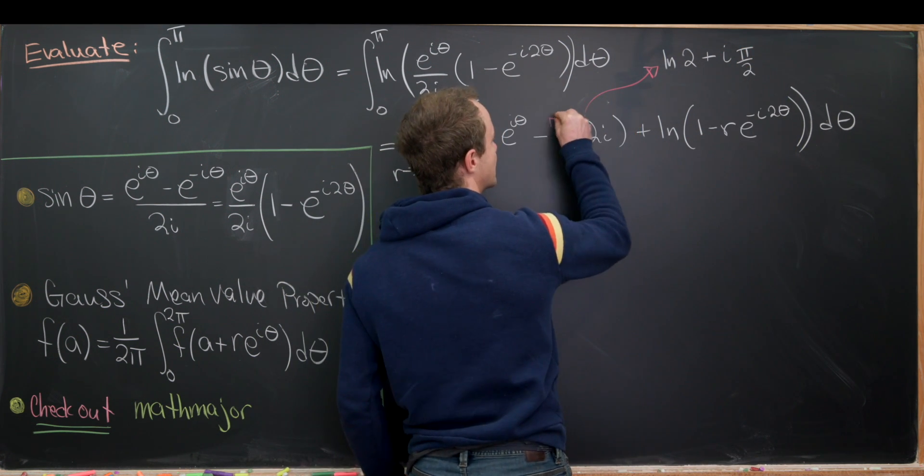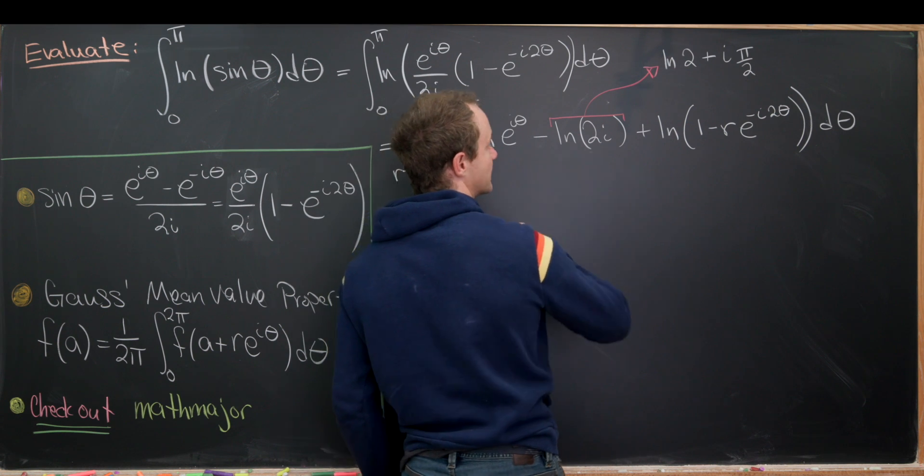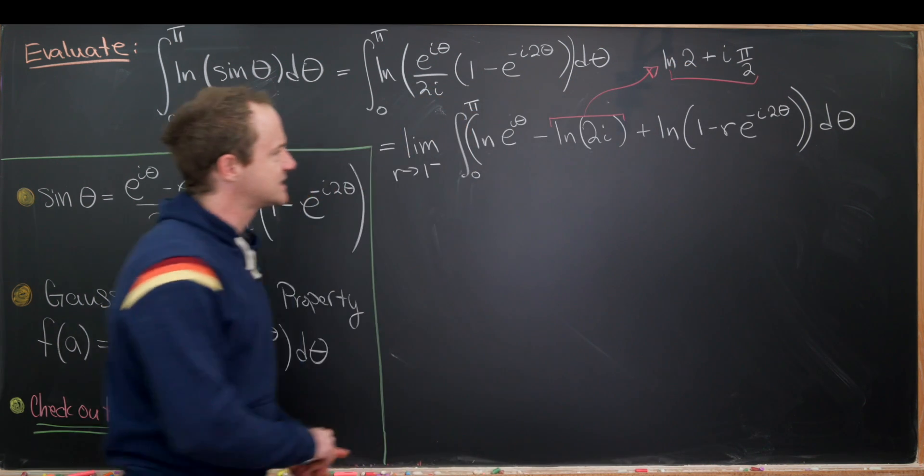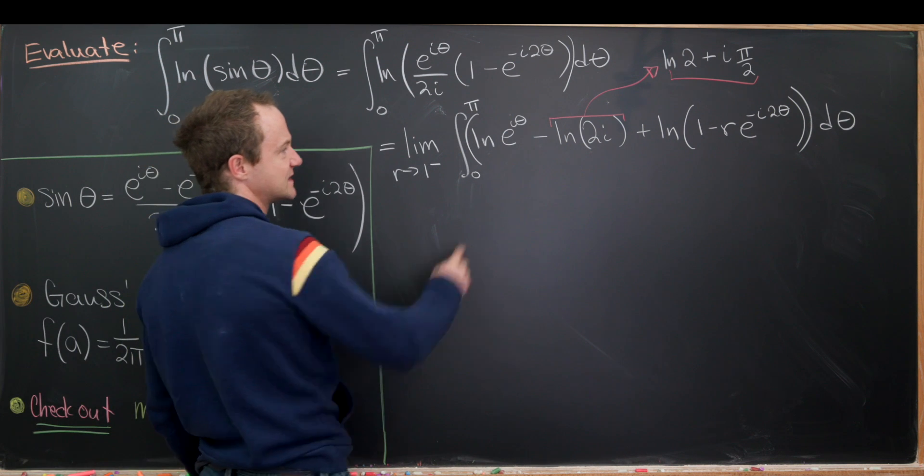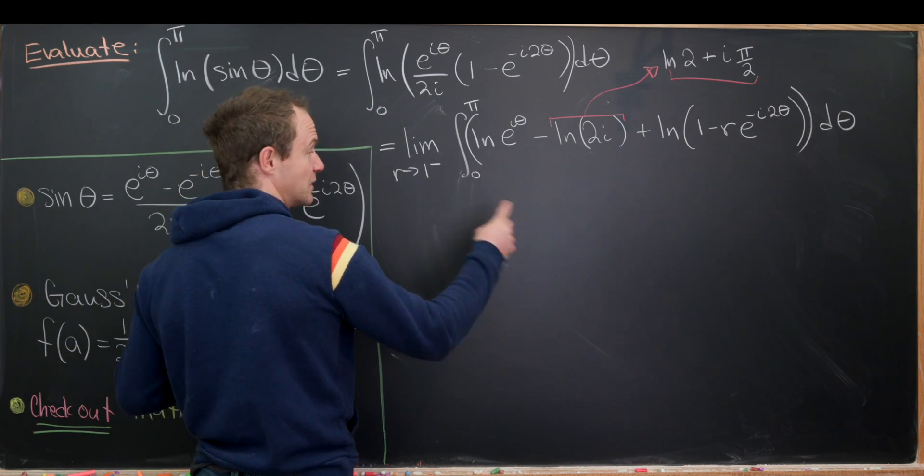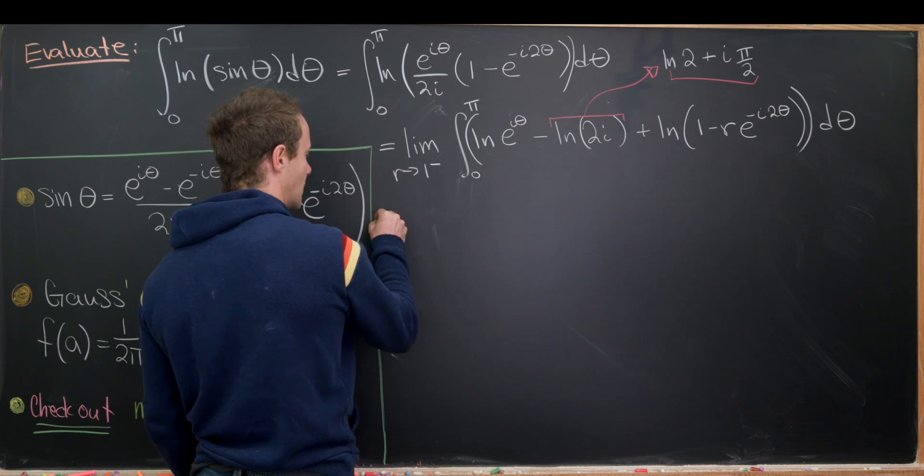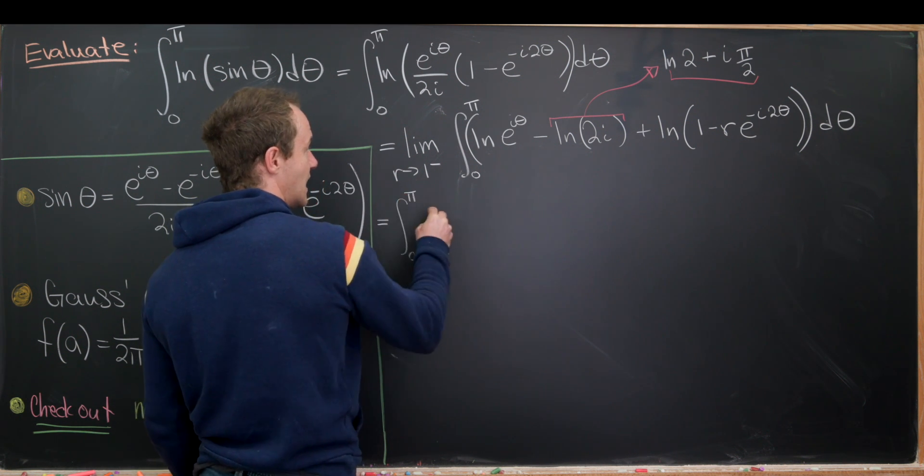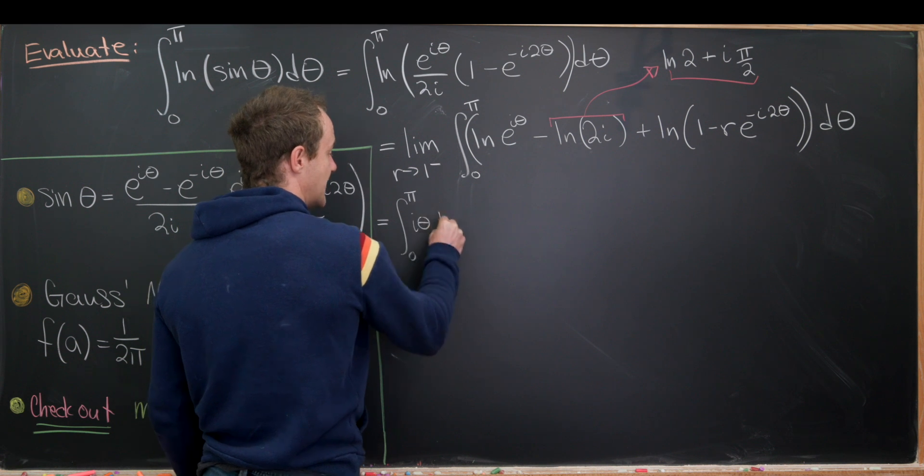Okay, so just to reiterate, we can replace this entire natural log of 2i with this. Okay, so let's see what that leaves us with. Well, since none of these things involve an r, I'm going to maybe split these into a couple of integrals, only one involving r. So now I'll have the integral from 0 to pi of i theta d theta.